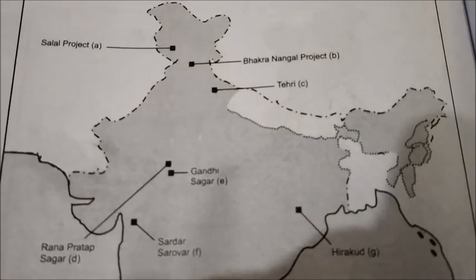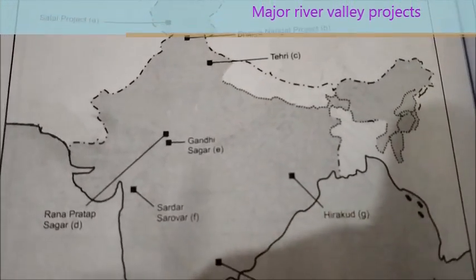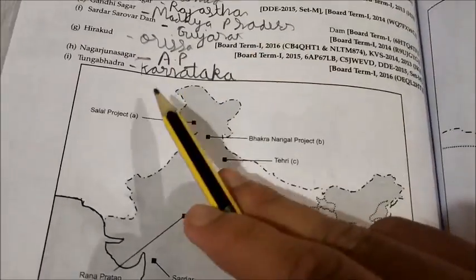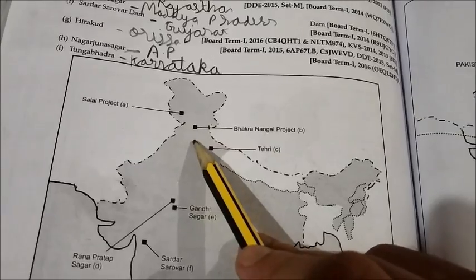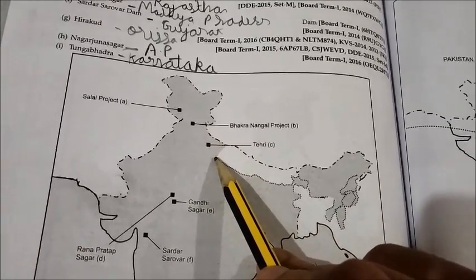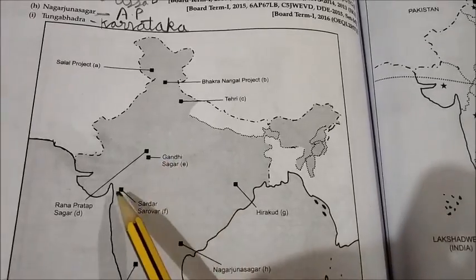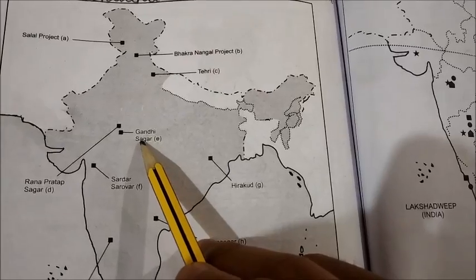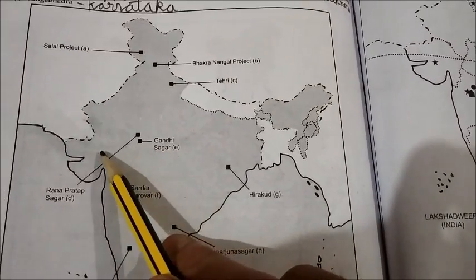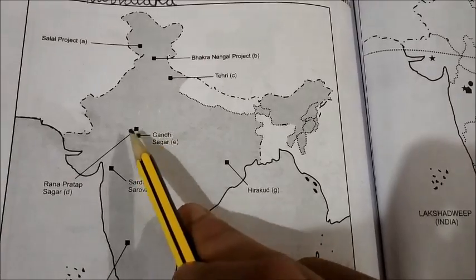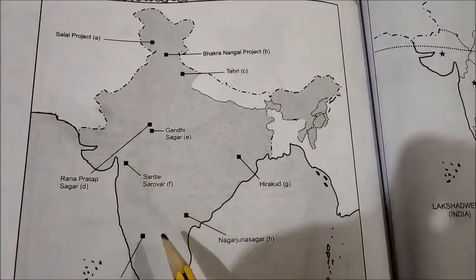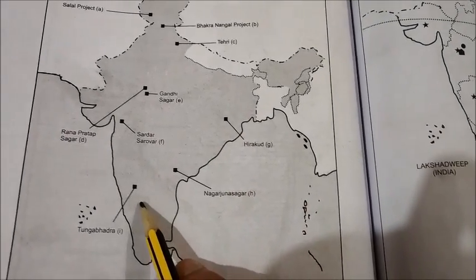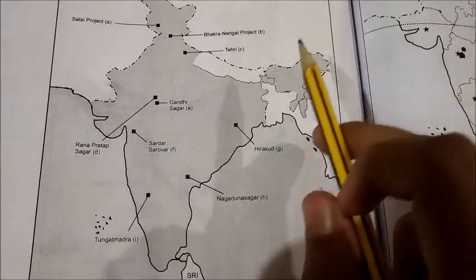From Chapter 3 on water resources, you need to remember a few very important dams. Salal project is in Jammu and Kashmir. Bhakra Nangal dam is in Himachal Pradesh. Tehri dam is in Uttarakhand. Rana Pratap Sagar is in Rajasthan. Gandhi Sagar is in Madhya Pradesh — please don't mark it in Gujarat or Rajasthan. Sardar Sarovar dam is in Gujarat. Hirakud is in Orissa. Nagarjuna Sagar is in Andhra Pradesh. Tungabhadra is in Karnataka.